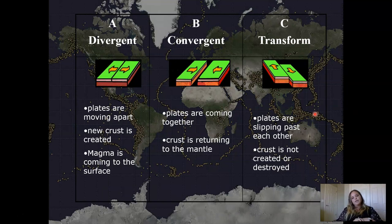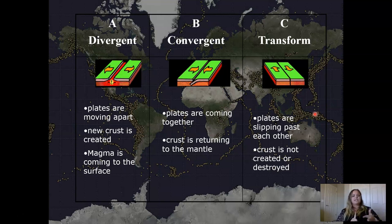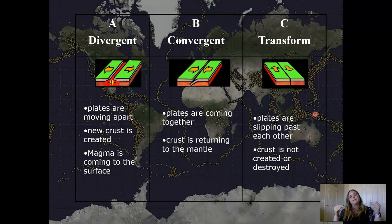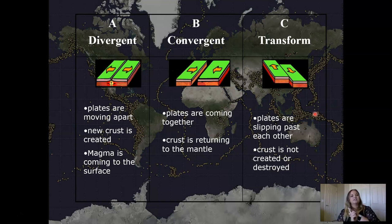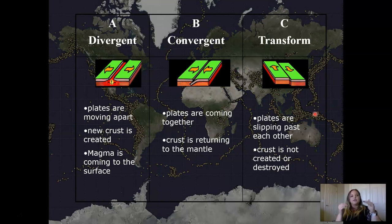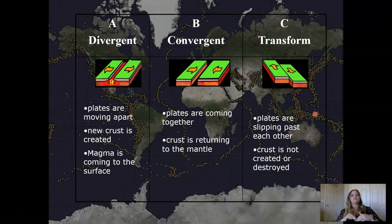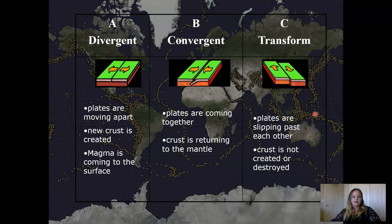To review: we have three basic plate boundaries. With divergent boundaries, plates move apart, new crust is created, and magma comes to the surface. With convergent boundaries — oceanic-oceanic, continental-continental, or continental-oceanic — plates come together and crust returns to the mantle in many of these interactions. With transform boundaries, plates slide past each other: nothing is created or destroyed, and you only see offset on the surface. That's it for plate tectonics — see you in the next lecture.